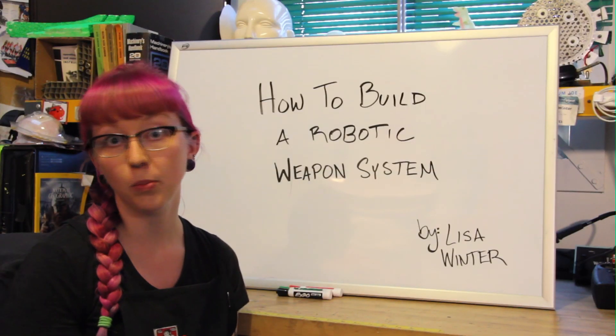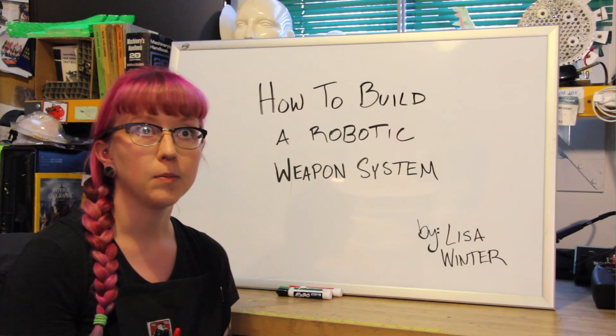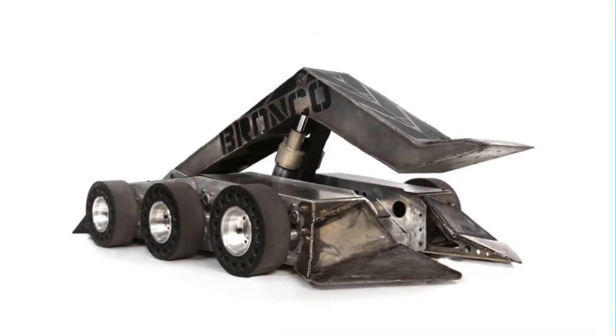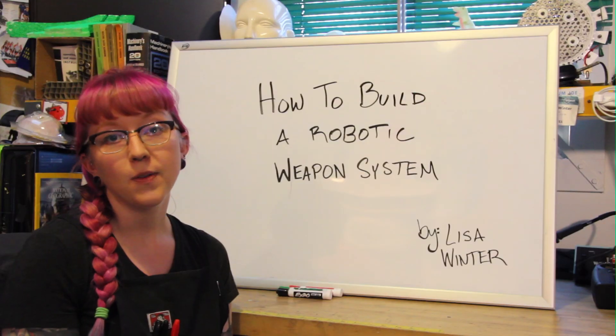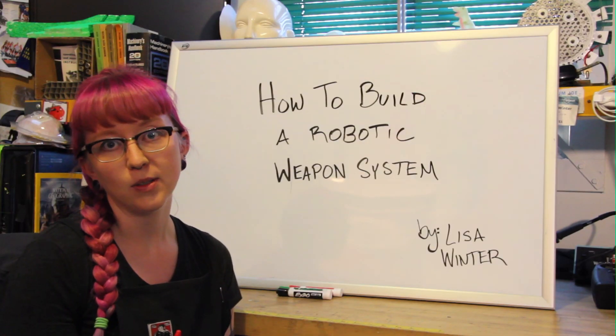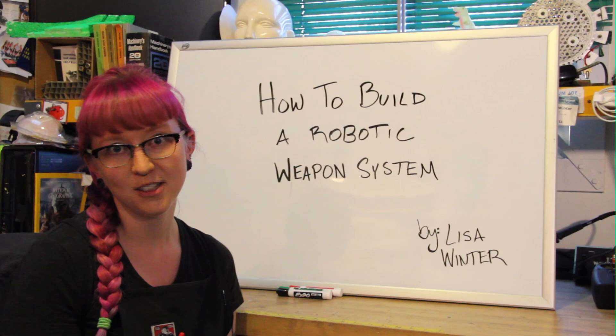There are many different weapons you can build for a combat robot. Some popular ones are flippers, grabbers, bar spinners, and drum spinners. In this video I'm going to show you how I built the drum spinner for Mini Tento.